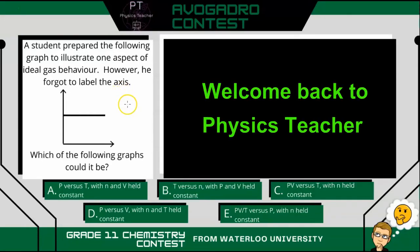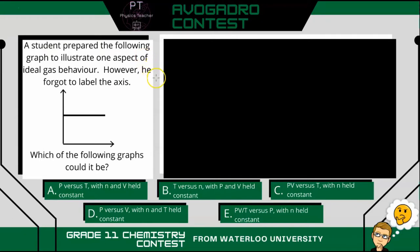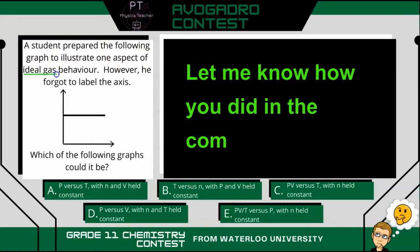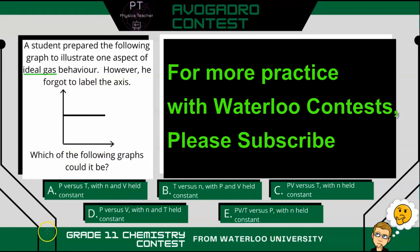Hi, welcome back to Physics Teacher. This is a question on the Avogadro Contest, which is the grade 11 chemistry contest from Waterloo University. It says a student prepared the following graph to illustrate one aspect of ideal gas behavior. However, he forgot to label the axes. Which of the following graphs could it be? Give it a try, and I'll be right back with the answer.